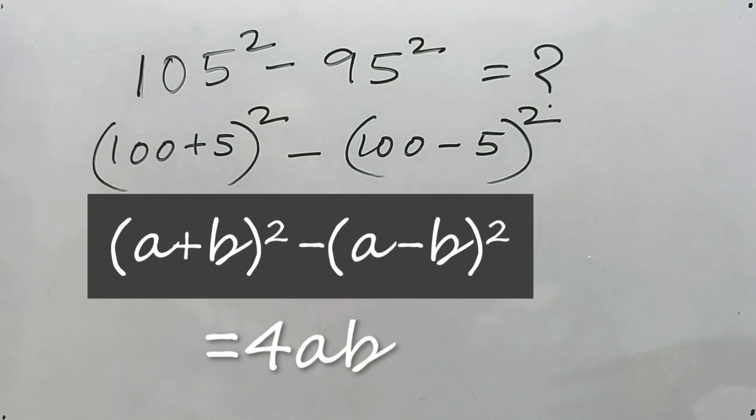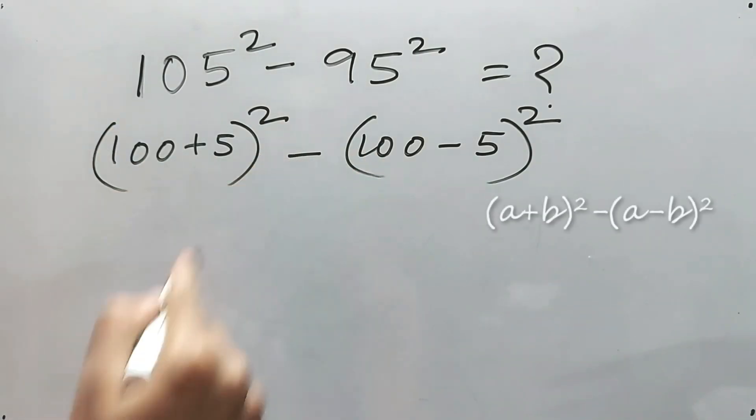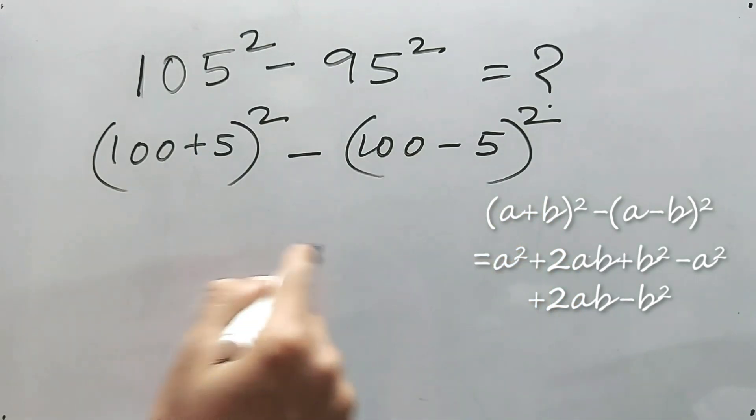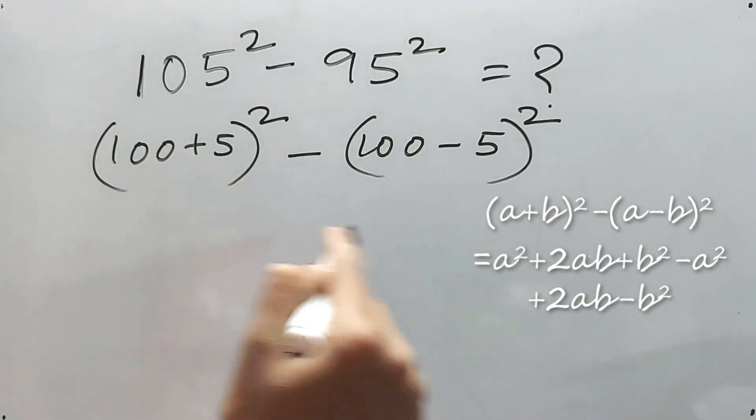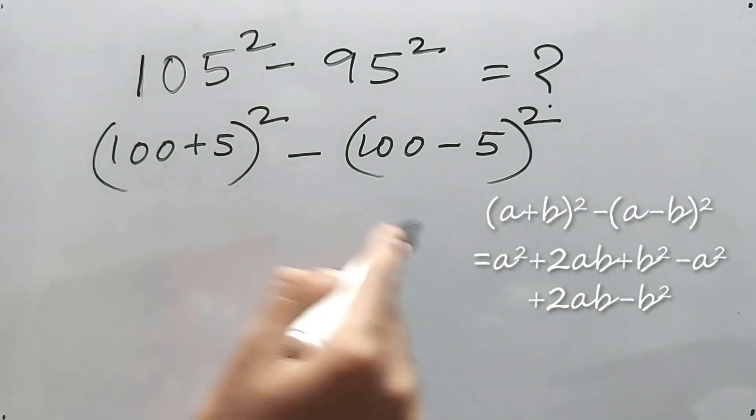Why? Yeah, definitely. A square will be cancelled because there is a minus sign, and b square will also be cancelled because of this minus sign. And because of this minus sign, this 2ab minus 2ab will be plus 2ab. That's why total we'll get 4ab.